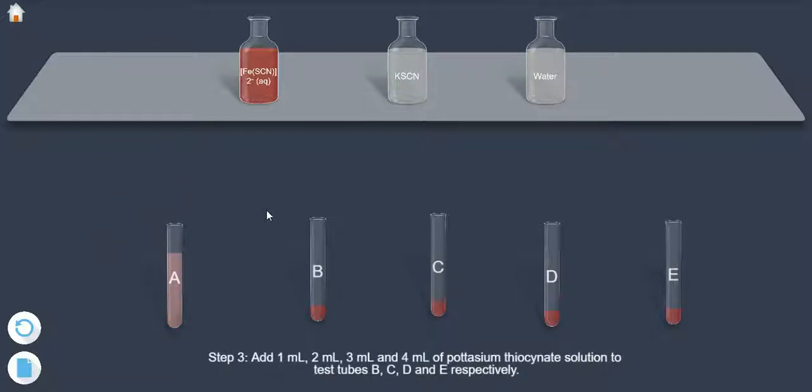Step 3. Add 1 ml, 2 ml, 3 ml and 4 ml of potassium thiocyanate solution to test tubes B, C, D and E respectively.